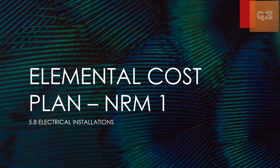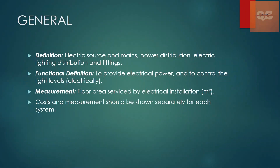In this video I'll be mainly focusing on electrical works only, the code for which is 5.8. This is a general brief of what electrical installation is about. Electrical works cover the main source and distribution — how different power is distributed, how lighting distribution is done, and what the source is. The functional definition covers why this is used: mainly to provide electrical power and to control different items like light levels and power sockets.